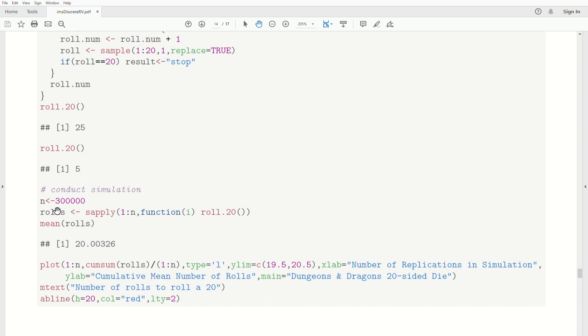And if we just take the mean number of rolls, it's 20.00. So it's really close to 20, which it should be. So remember, this vector consists of numbers, could be 52, could be 3, could be 1, could be 20. And then that's the average number.